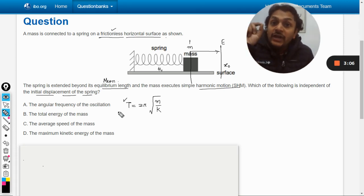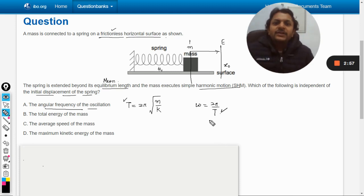And obviously the angular frequency omega is dependent on T. Omega equals 2π divided by capital T. So if T is independent, omega does not depend upon the initial amplitude. But why does it not depend? If it is stretched more, why does it not take more time?